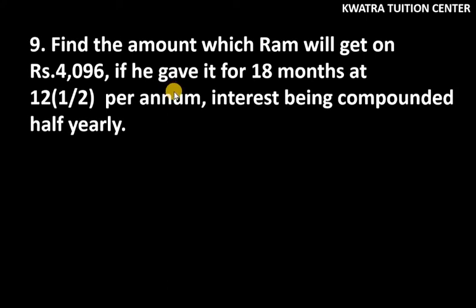Hello everyone, let's start with question number 9 of exercise 8.3. It says, find the amount which Ram will get on Rs. 4,096, if he gave it for 18 months at 12.5% per annum, interest being compounded half yearly.